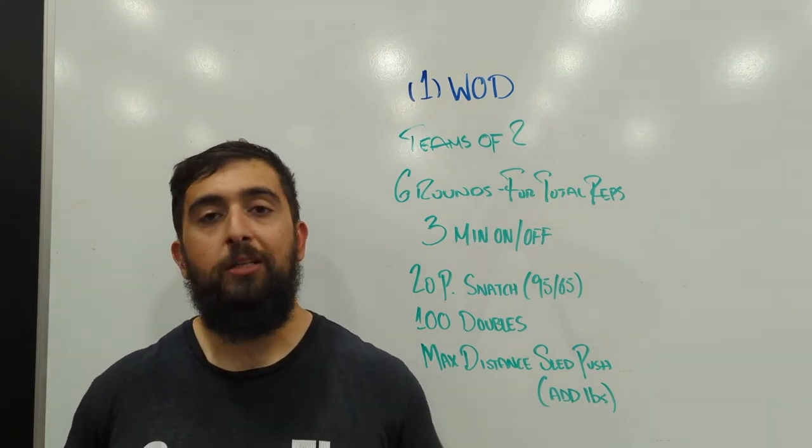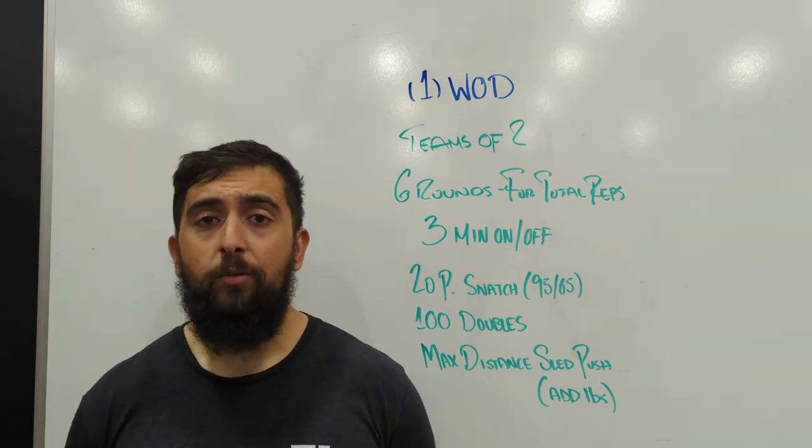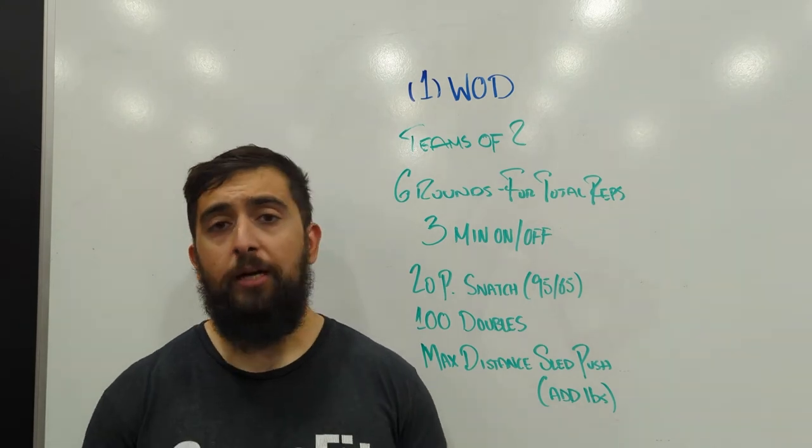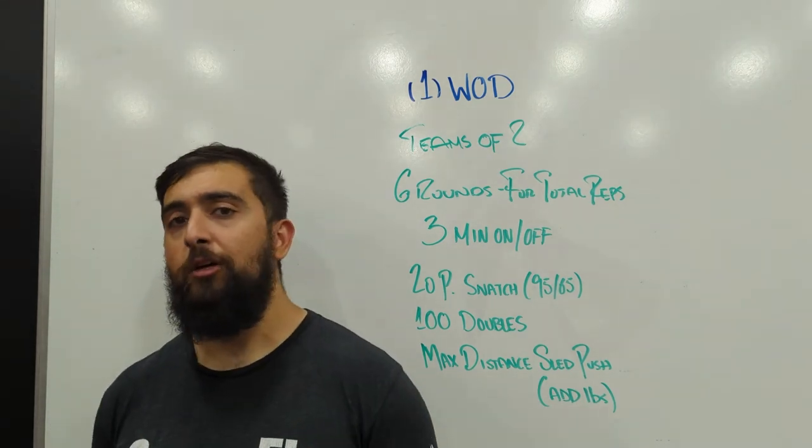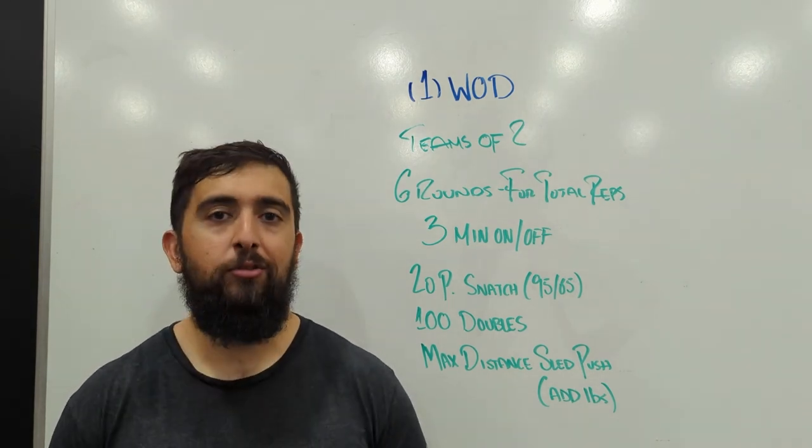So what I would do is calculate your total distance by the end of it. Start on one end, whether it's on the orange or one side or the other, and then keep track of how far you've gone by the end of those six rounds. It's going to get challenging by the end of it, especially having six more plates on top of your sled there.